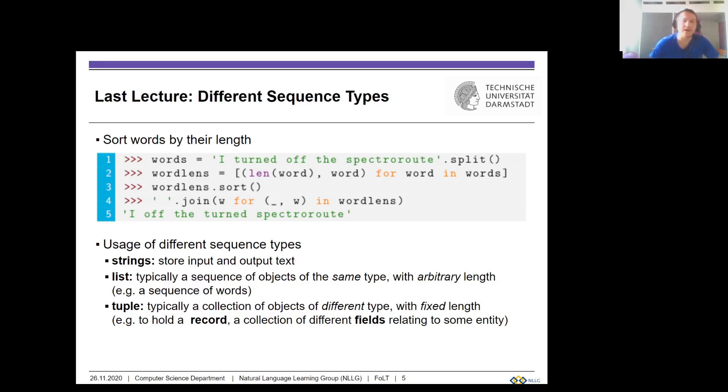We learned how to sort sequences, for example a sequence of words. We can apply the sort function—there's also a built-in Python structure called 'sorted'. Sorting in Python changes from version to version, like from Python 2 to Python 3, so if you're in doubt, look it up on Stack Exchange. We've seen how to use different types of sequences such as strings, lists, and tuples, and what their differences are.